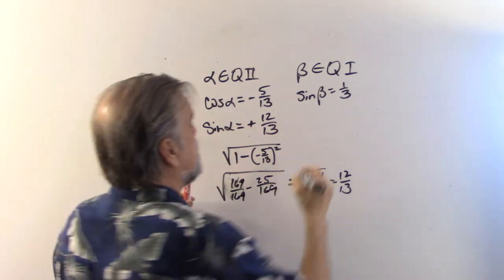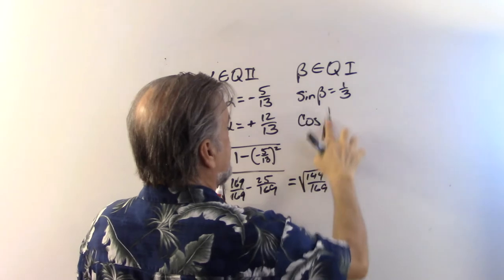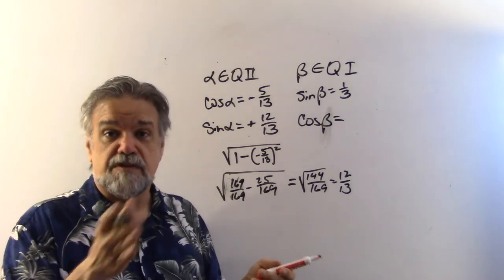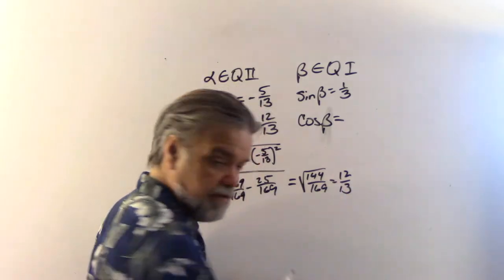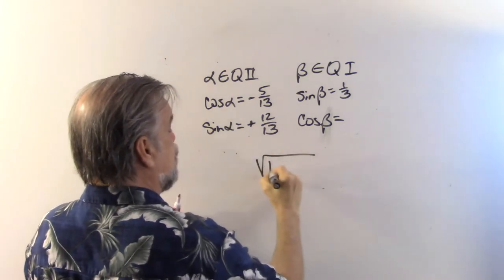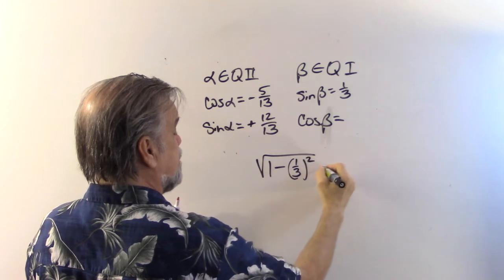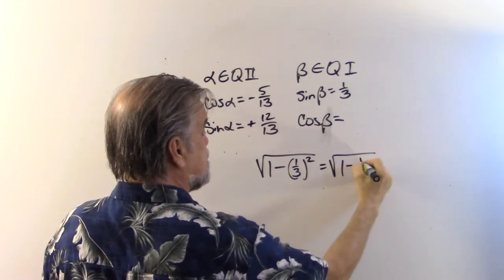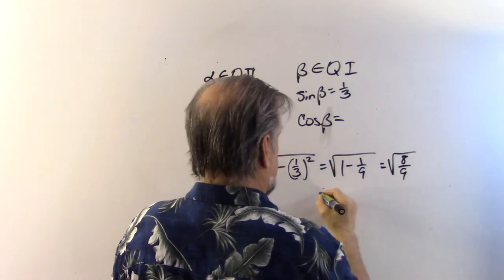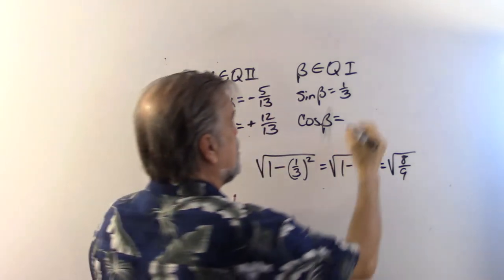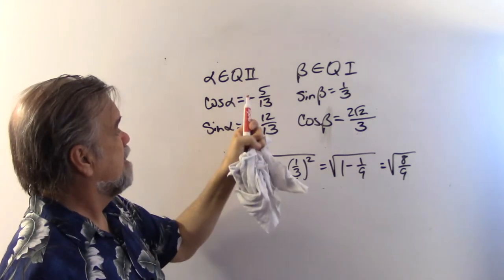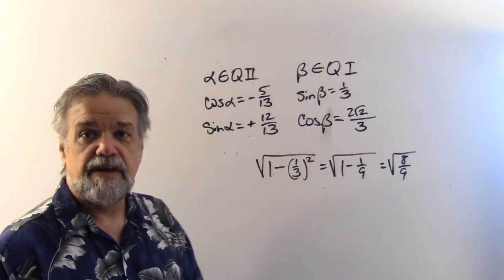Now I need cosine of beta. Again, sine² + cos² = 1, so cosine of beta is the square root of 1 minus (1/3)² = √(1 − 1/9) = √(8/9) = (2√2)/3. Beta is in quadrant one so cosine is positive: cosine of beta is 2√2 over 3. Now I have cosine α, sine α, sine β, and cosine β — I'm ready to go.